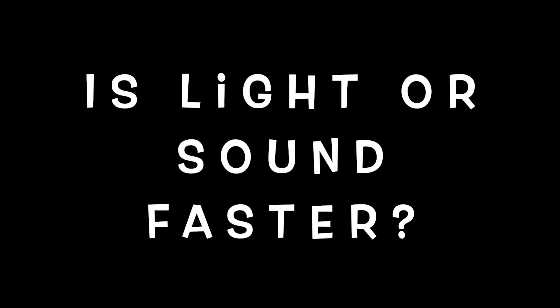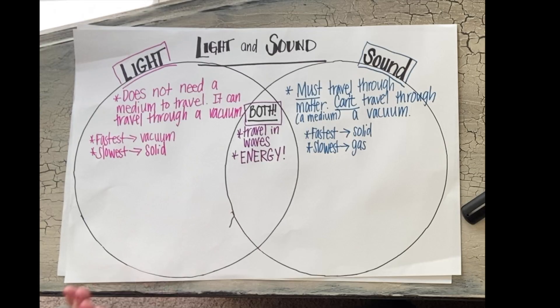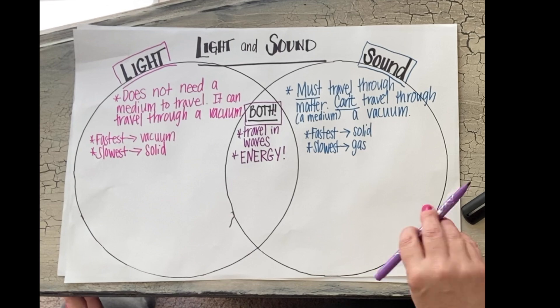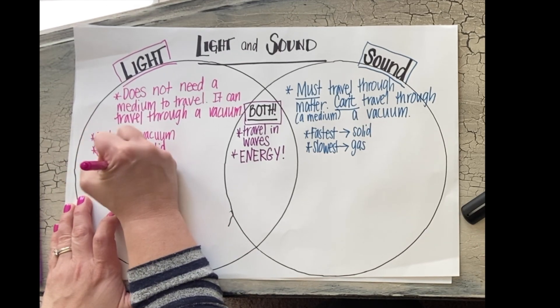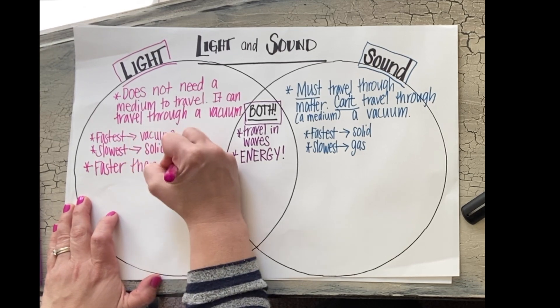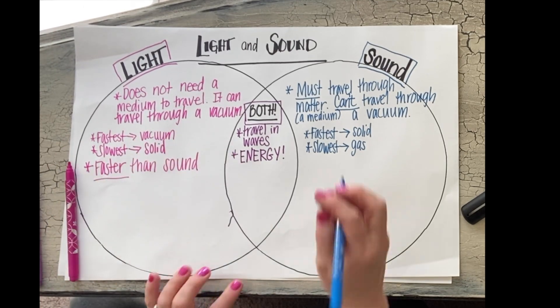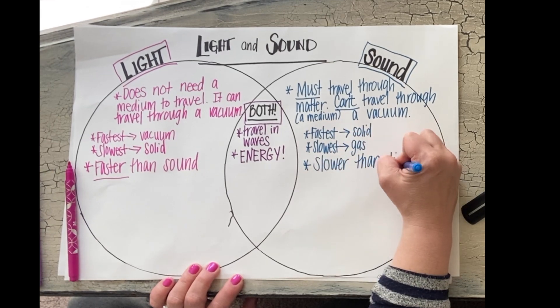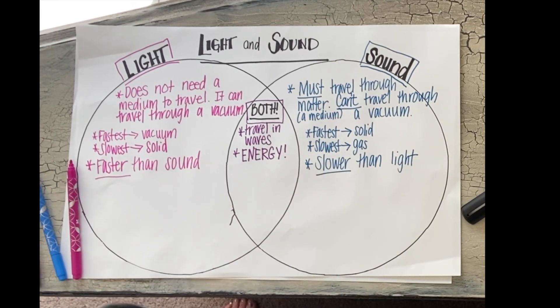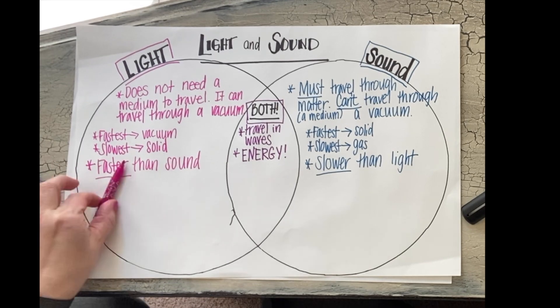Is light or sound faster? Light is actually faster than sound. Remember we talked about examples like fireworks — you're going to see the flash of light before you hear the boom. We also talked about thunderstorms: you're going to see that flash of lightning before you hear the boom of the thunder. Light is faster than sound.